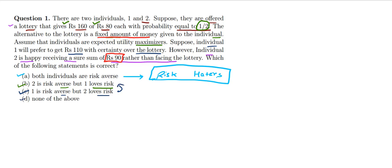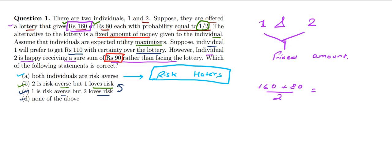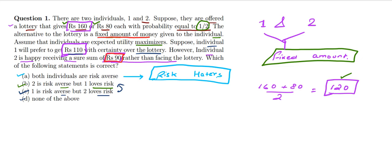Both individuals went for the fixed amount and left the lottery, even though the lottery offers rupees 160 or rupees 80. The average expected amount from the lottery is rupees 120. Individual 1 accepted rupees 110 and Individual 2 accepted rupees 90 — both less than 120 — yet they chose the fixed amount. Hence, both try to avoid risk and are risk averse. Option A is the correct answer.